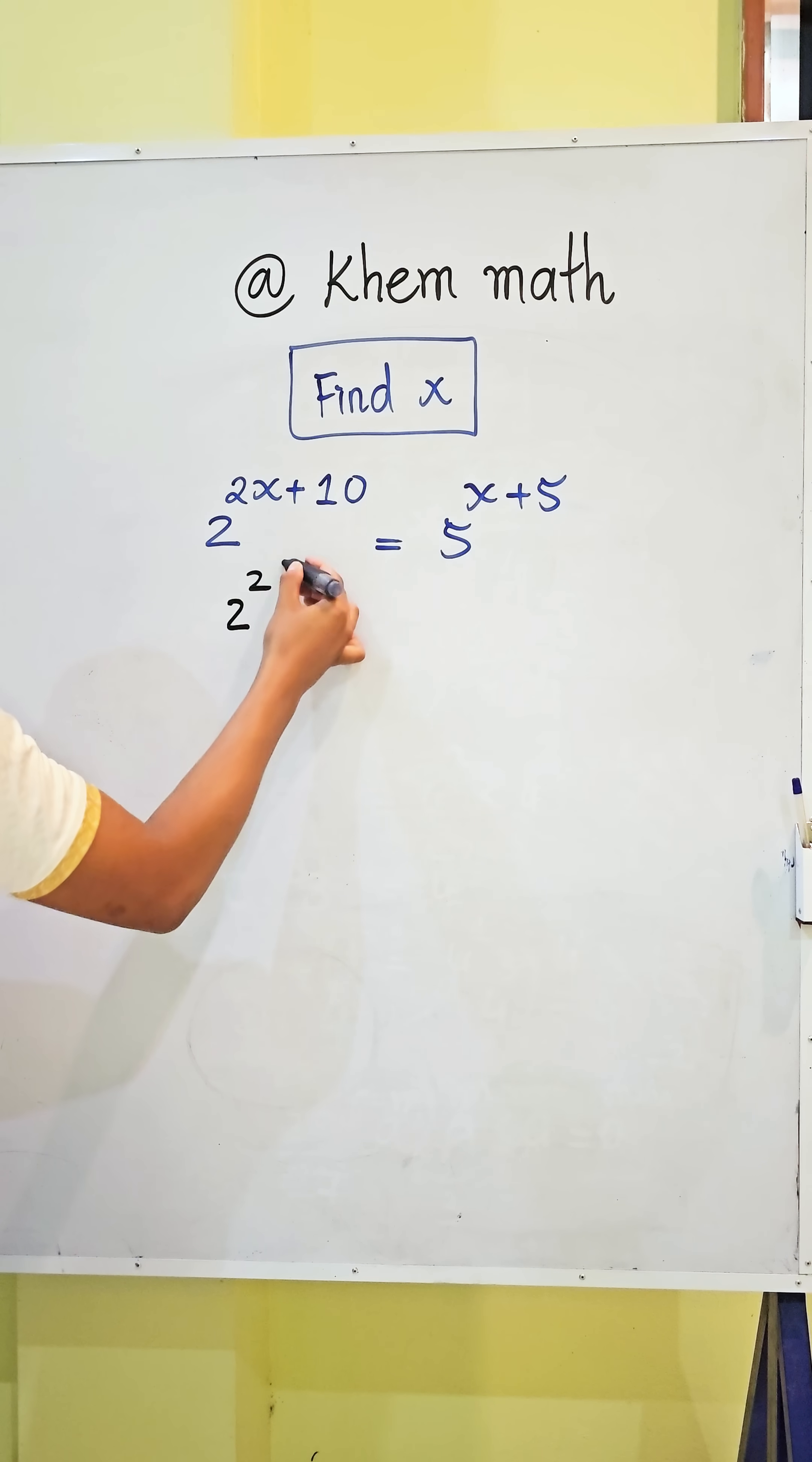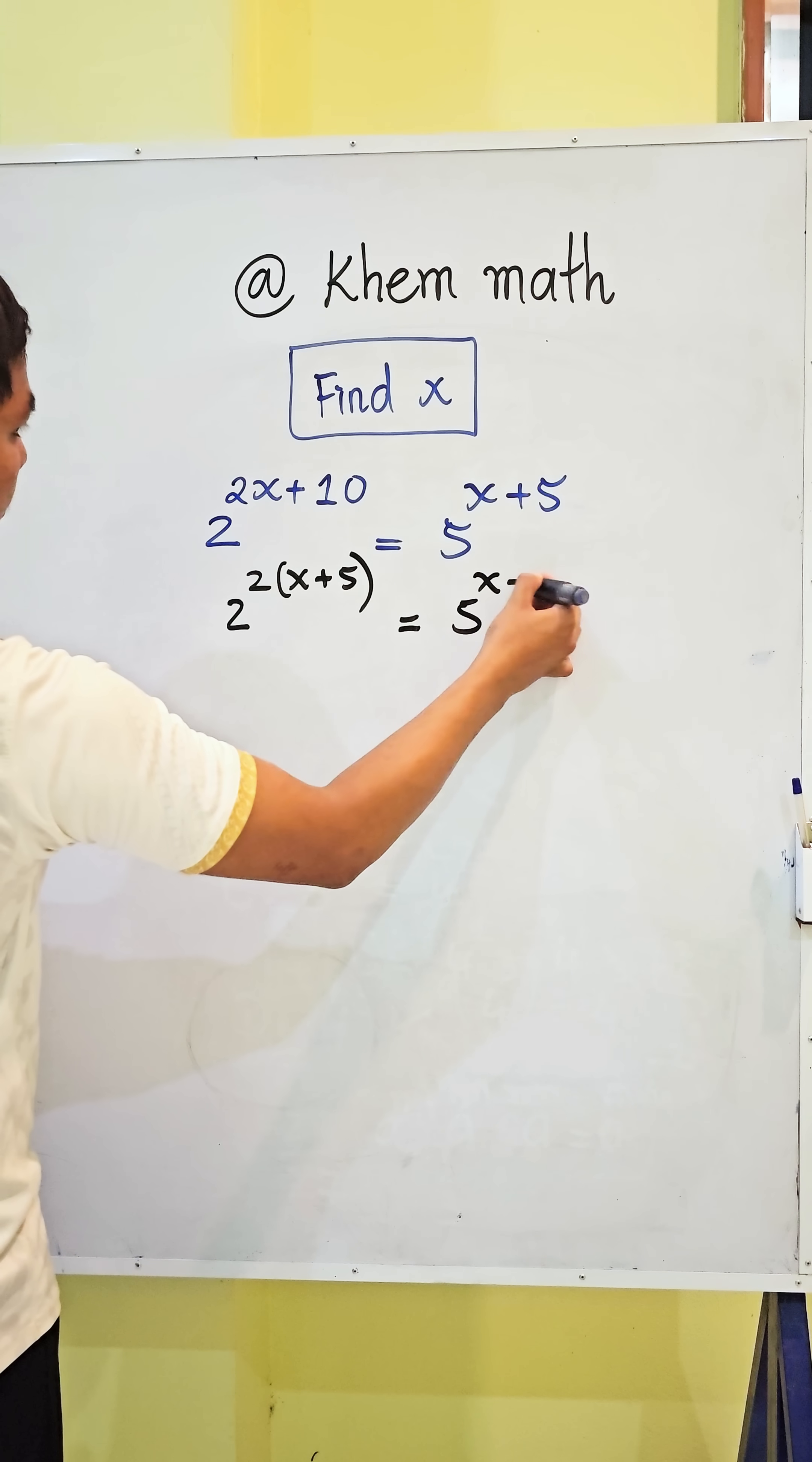We get 2 to the power of 2 times x plus 10 divided by 2, which gives us 5, and that equals 5 to the power x plus 5. Then we divide both sides of this equation by 5 to the power x plus 5.